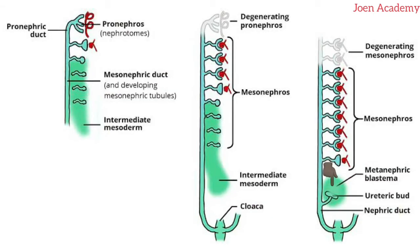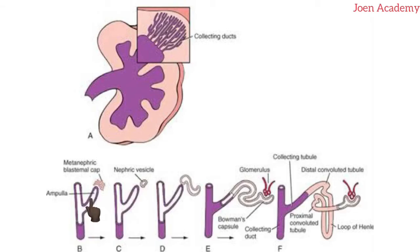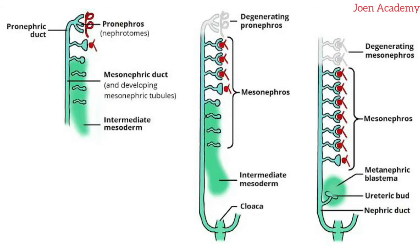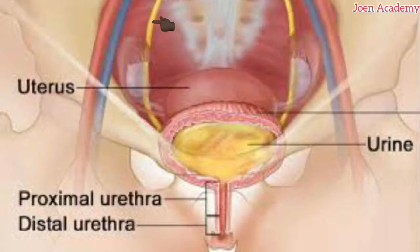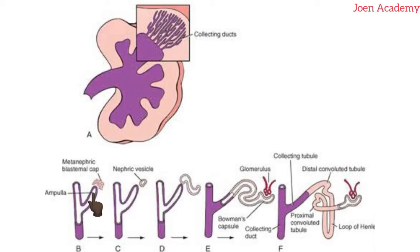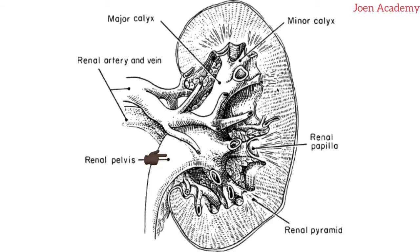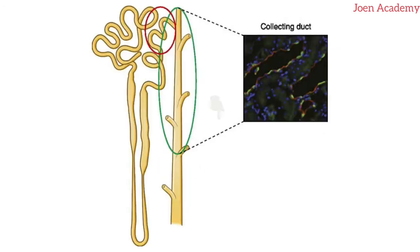The ureteric bud arises from the lower part of the mesonephric duct near its entry into the cloaca. As the ureteric bud grows towards the metanephric blastema, its growing end becomes dilated to form the ampulla. The portion of the mesonephric duct between the ureteric bud and the cloaca is called the common excretory duct. The stalk of the ureteric bud will give rise to the ureter. The first three generations of divisions of the ampulla will fuse to form the pelvis of the kidney, the next divisions will form the major calyces, while further divisions will form the minor calyces and the collecting tubules.